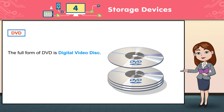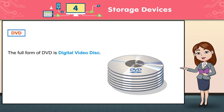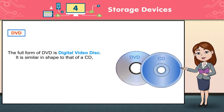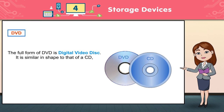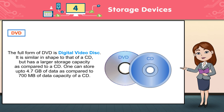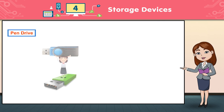DVD-ROM is a circular disk. The full form of DVD is Digital Video Disk. It is similar in shape to that of a CD, but has a larger storage capacity as compared to a CD. One can store up to 4.7 GB of data, as compared to 700 MB of data capacity of a CD.